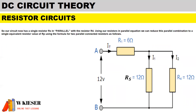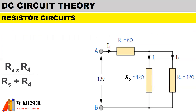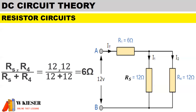We can simplify the circuit further by replacing R2 and R3 with a single resistor RS of 12 Ohms. Our circuit now has RS in parallel with R4. Using our resistors-in-parallel equation, we reduce this parallel combination to a single equivalent resistor Rp. Using the formula for two parallel connected resistors: RS multiplied by R4, divided by RS plus R4. Substituting the values: 12 multiplied by 12, divided by 12 plus 12, gives us a parallel combination of 6 Ohms.